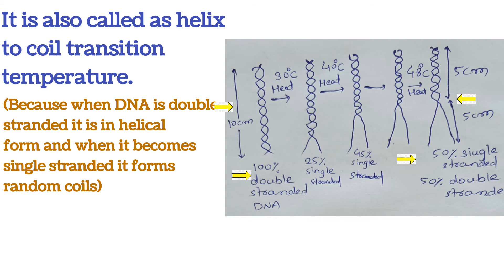Tm is also called the helix-to-coil transition temperature. When DNA is in its original state it is present as a helix. When melting occurs, single strands coil around themselves, but this coiling is random. Imagine two ropes tightly tangled together like DNA — as you slowly separate them, the separated ropes do not stay straight but make random coils over themselves, not with the other strand. So there is a transition of DNA from helical form to random coils.